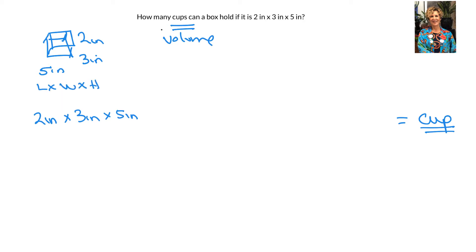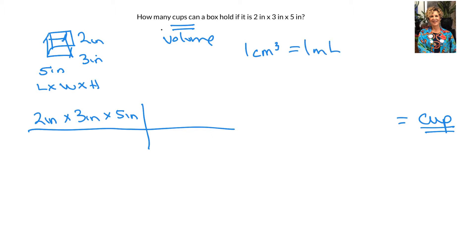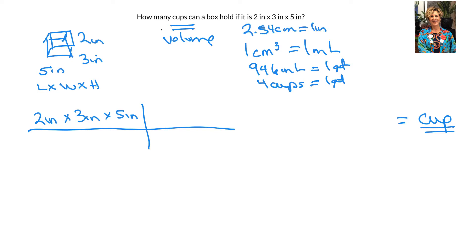Here I go. I know that if I can get to cubic centimeters, a cubic centimeter equals that many milliliters. I know there are 946 milliliters in a quart, and there are four cups in a quart — so I can get there. I just need to be able to get to centimeters. From my metric conversion sheet, 2.54 centimeters equals one inch. Those are all the equivalences I need.